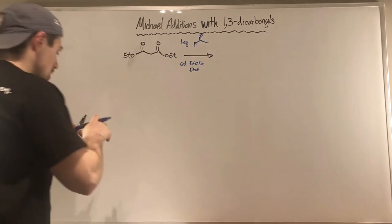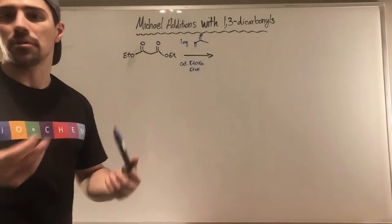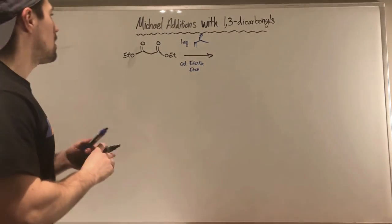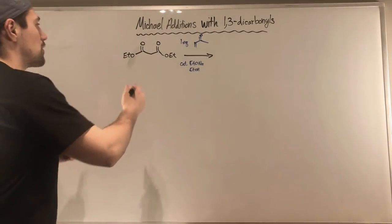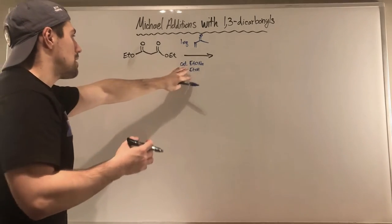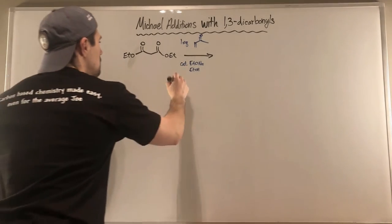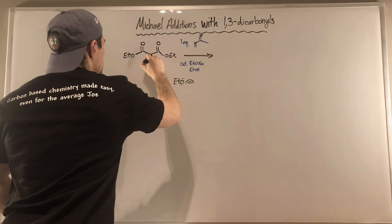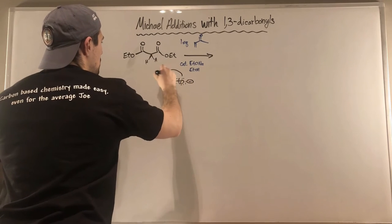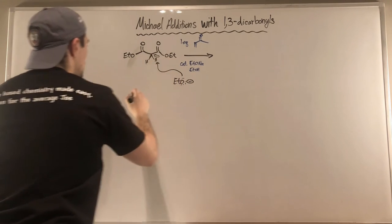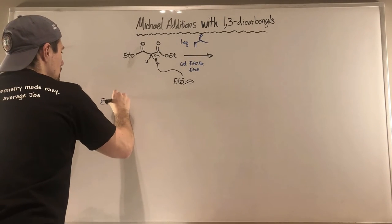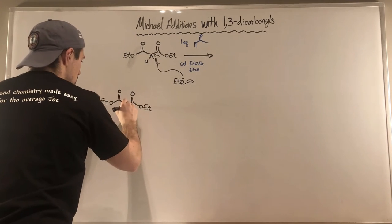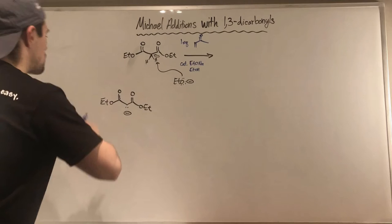The catalytic conditions mean the base isn't participating in the reaction per se — it's just going to help us do some deprotonation. So the first step is we need a nucleophile, and that's what the base is going to help us do. Ethoxide comes in — this is all familiar territory. We have two protons here to work with between our two carbonyls; it doesn't matter which one you pick. Deprotonate, and stick a lone pair on the alpha carbon between our two carbonyls. Now we have our soft nucleophile.